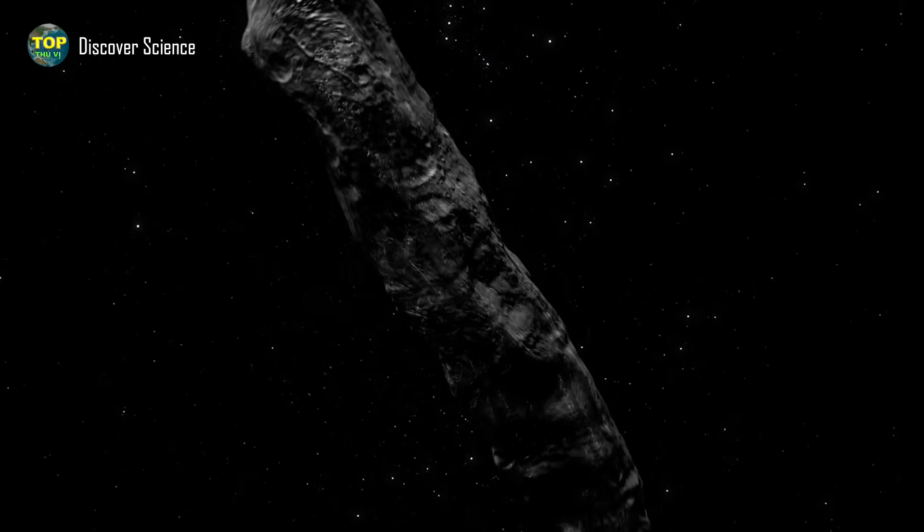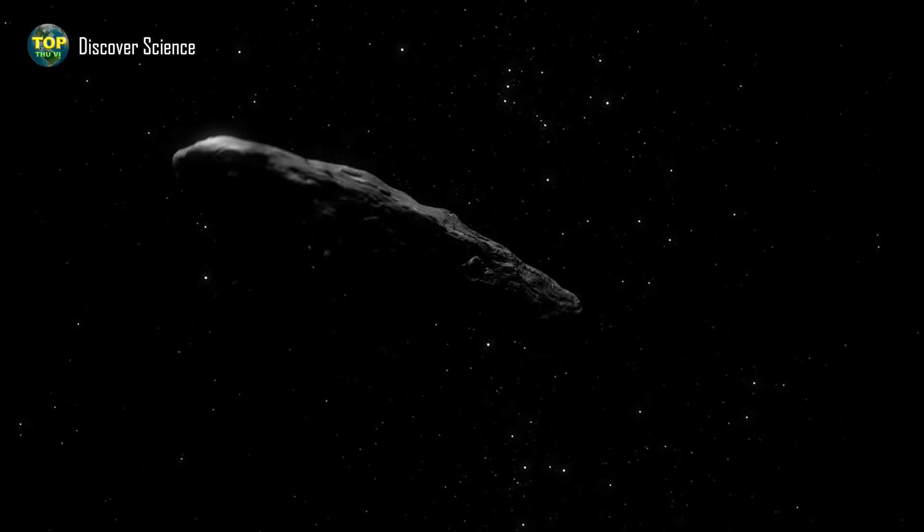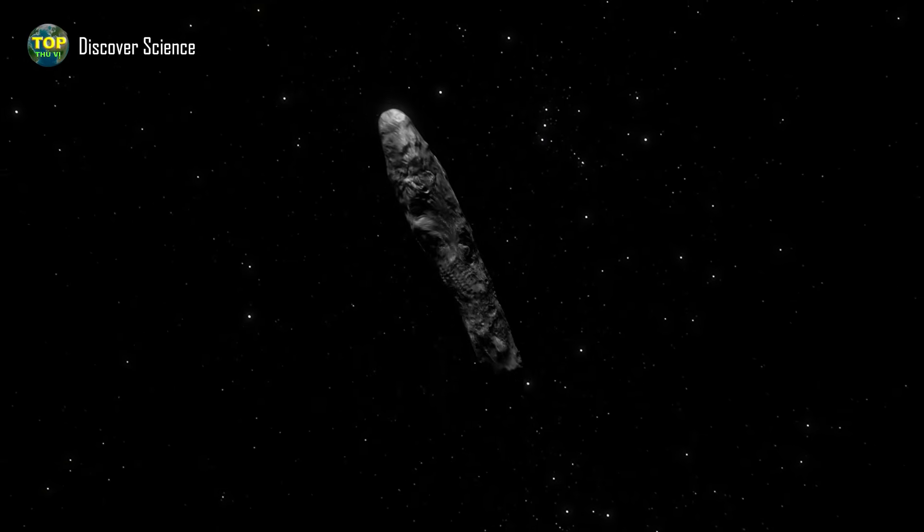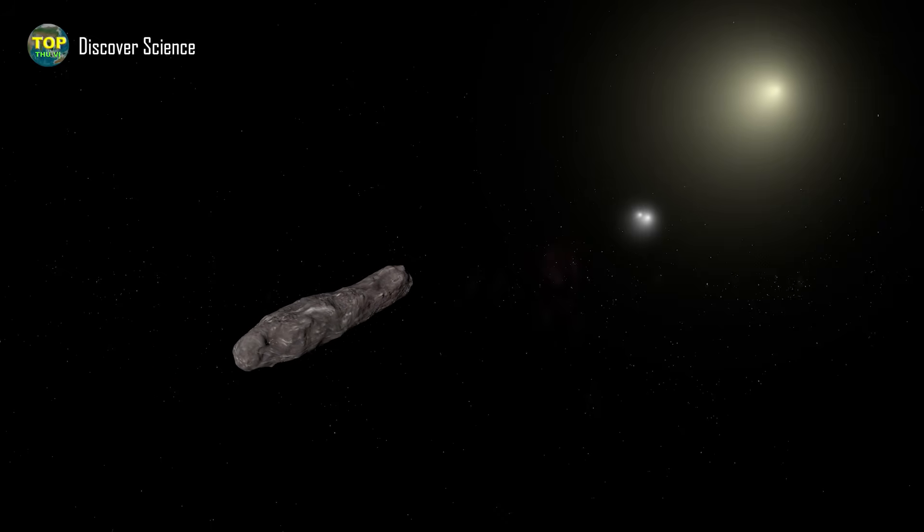It wasn't until 40 days later, as it was moving away from the sun, that scientists finally noticed a tiny bright dot traveling at an incredible speed across the display screen. After it was discovered, 'Oumuamua didn't give observers much time to collect data.